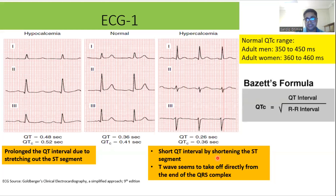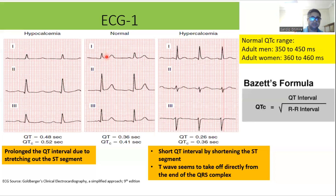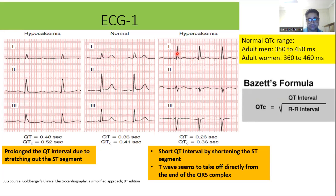Now we'll go through some ECGs in hyper- and hypocalcemia and look at the findings. This first ECG actually shows three ECGs side by side — a normal patient, a patient with hypocalcemia, and a patient with hypercalcemia. Starting with hypercalcemia, you can see that the ST interval is shortened compared to the normal QT.